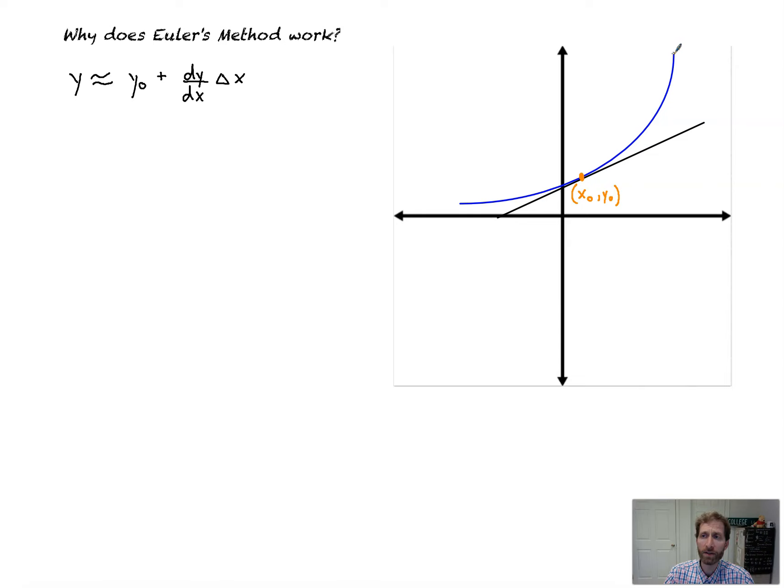Euler's Method allows us to approximate values on a curve that we don't know what it looks like or what the function even is, but we're given that curve's derivative. So what we can do is use the tangent line at a point that we are given is on this curve right here.